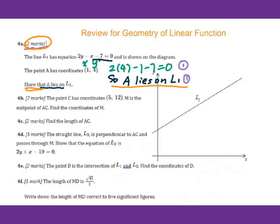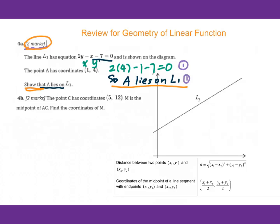Go to 4b. The point C has coordinates (5, 12). M is the midpoint of AC. Find the coordinates of M. Let's find A and C. So we draw M on the line. This is A, 1, 4. How do you locate this thing? You have to decide: 1, 2, 3, 4, 5. You have to check the point.